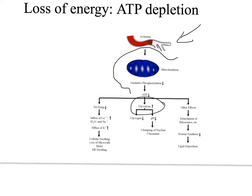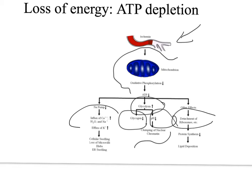Glycolysis causes us to use glycogen and affects our pH level, causing clumping of nuclear chromatin. In addition, when we have ATP depletion, we have changes in our sodium pump, which causes an influx of calcium, water, and sodium into the cells, and an efflux of potassium out of the cells, causing swelling, loss of microvilli, blebs, and endoplasmic reticular swelling as well. Some of the other effects of ATP depletion include detachment of ribosomes, causing decreased protein synthesis, and lipid depositions.